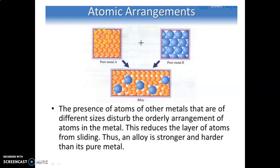If you see the arrangement of atoms in the pure metal, you will see that they are of the same size and they are arranged in a regular pattern. So when an external force is applied, these layers slide over each other, making the metal soft. But in case of alloys, due to the different sized atoms, the layers do not slide over easily.